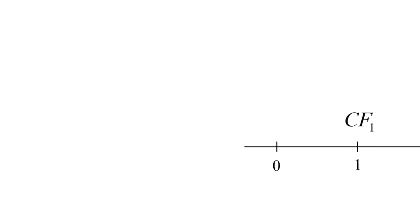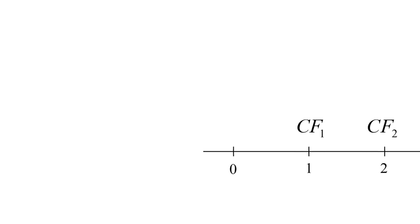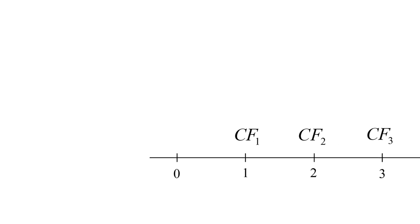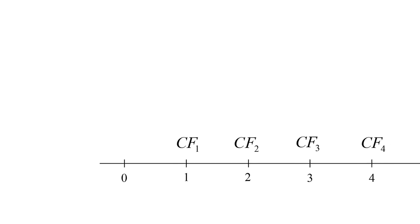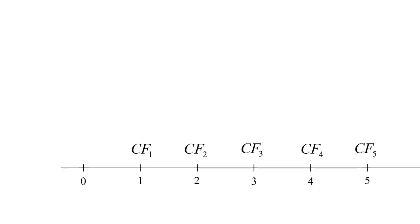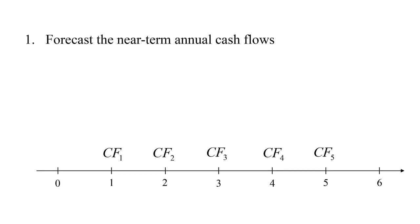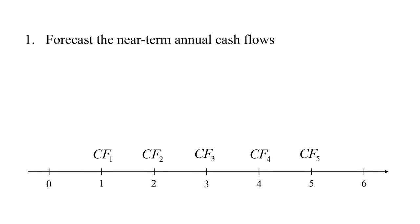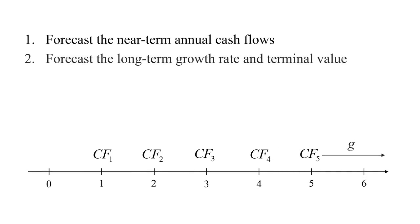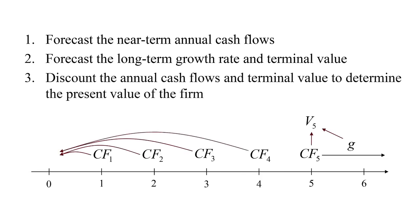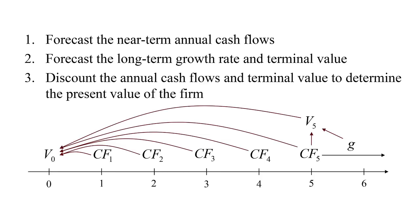Just as with the dividend discount model, we're going to make year-by-year forecasts of the cash flows. But this gets very problematic when we go out too far into the future, since we might not have a good idea for long-term year-by-year cash flow forecasts. So we'll focus on making a forecast of the near-term annual cash flows. Beyond that, we're going to forecast a long-term growth rate, or some average annual growth rate, for the cash flows of the firm. This will allow us to forecast a terminal value for the firm, say five years out. We'll discount those annual cash flows, in addition to the terminal value, to determine the present value of the firm. On the timeline we're trying to calculate the value at time zero, V sub zero.